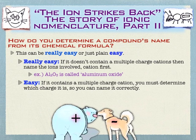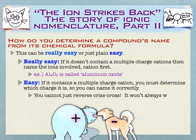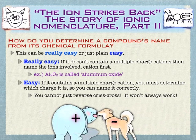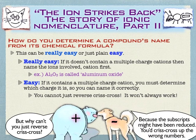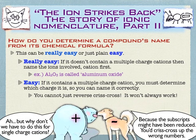Where it gets difficult is with multiple-charge cations. This is where it's to your advantage to have memorized your multiple-charge cations, because you need to identify them and know if their compounds must be named differently. You can't just reverse criss-cross all the time, because you might have reduced your charges — as the answer key shows. You have to be careful about that; it's just bringing numbers back up and reversing, and that's where criss-cross can get you into trouble.